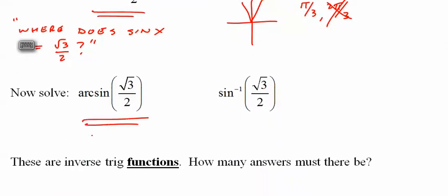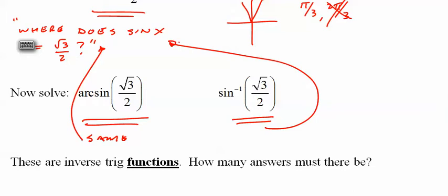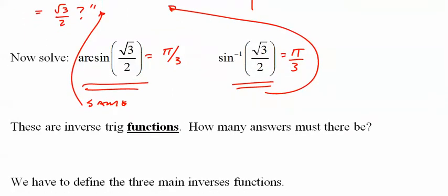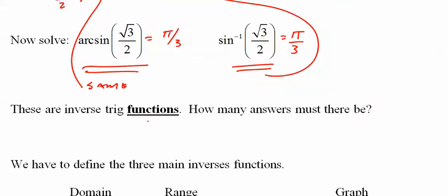Arcsine and sine to the negative first are the same thing: where does sine of X equal root 3 over 2? As I said, the answer is pi over 3 only. The reason is that arcsine — what we call inverse trigonometric functions — can only have one answer. With two answers it fails the vertical line test and is not a function. So: one answer.